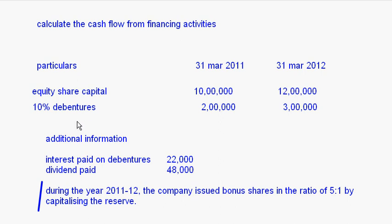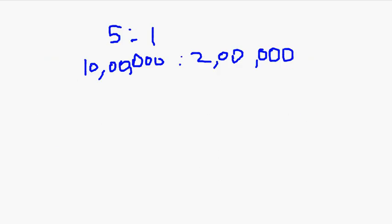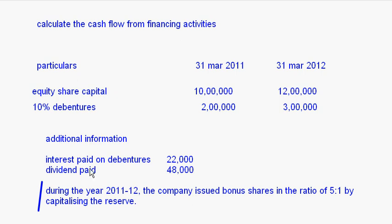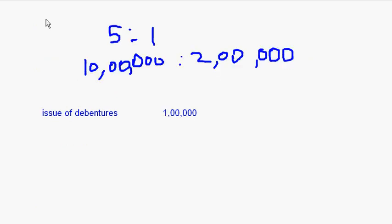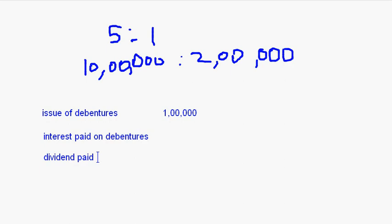The other item is 10 percent debentures — this is an issue of debentures. The issue of debentures is 1,00,000, so this is an inflow. Interest paid on debentures and dividend paid are both outflows. In some questions they give interim dividend on equity shares and dividend on preference shares — all dividends related to shares will be put as an outflow.